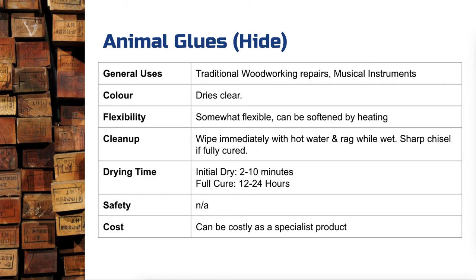A key benefit of hide glue is that you can continue to soften it by applying heat. If you've used animal glue on a project and need to undo a joint or take veneer off, you can use a hairdryer, heat the glue up, it will soften, and you can release the joint or veneer, work with it, and glue it back down. This is why musical instruments very commonly use hide glue — particularly for bent shapes and veneer applications — and it's also used in traditional woodworking repairs. Before PVA, this is what people would have been using, so for antique furniture restoration, a little heat applied to the joint would soften the glue and allow you to pull it apart without destroying the piece.